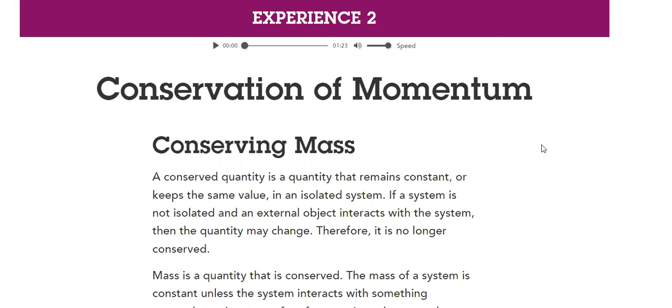How do I conserve momentum? A conserved quantity is a quantity that remains constant or keeps the same value in an isolated system. We already discussed the different types of systems. If a system is not isolated and an external object interacts with the system, then the quantity may change.